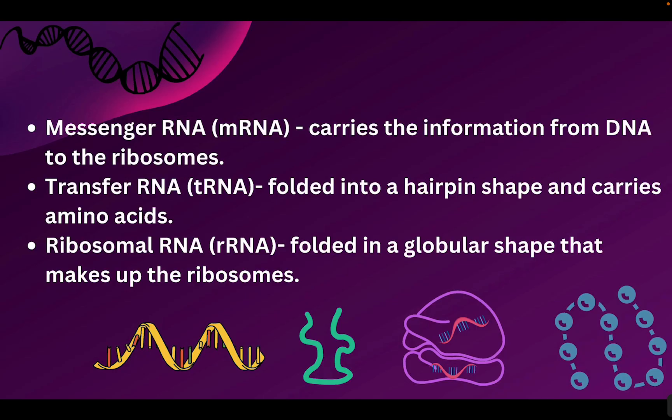The first is called messenger RNA, abbreviated mRNA. This is the RNA that gets the information from DNA and then goes out from the nucleus to the ribosomes — that's why it's the messenger. It's going to take that information from the DNA and send it as a message to the ribosomes.